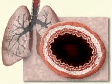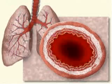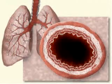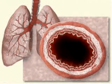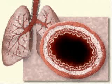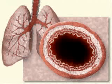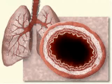Asthma is a chronic condition in which various irritants cause bronchioles to become inflamed. Some of the most common irritants are dust mites, pollen, smoke, stress, and infections. These irritants can cause a cascade of events, such as the release of leukotrienes and histamine from leukocytes and mast cells.